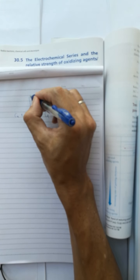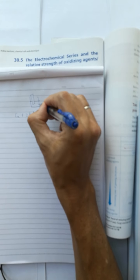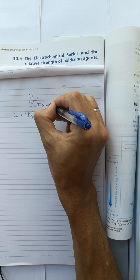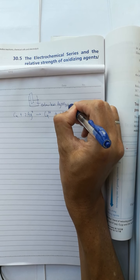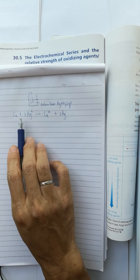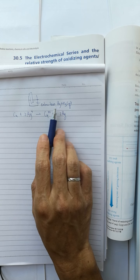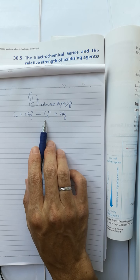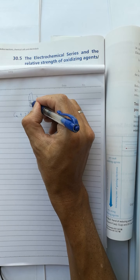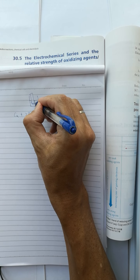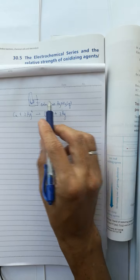What you see is the colorless silver nitrate solution gradually changes to blue solution because of formation of copper two plus, and the copper metal becomes coated with silver metal.